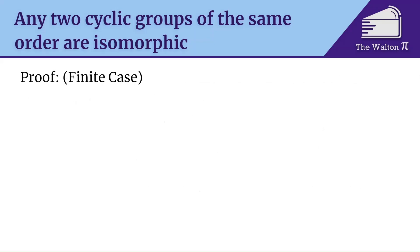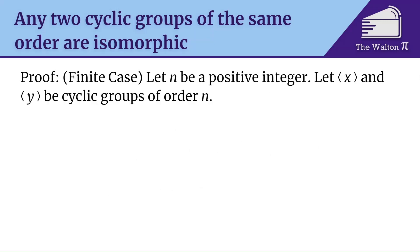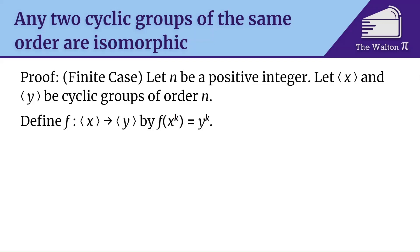We're going to start with the finite case. Let n be a positive integer, and let the group generated by x and the group generated by y be cyclic groups both of order n. We need to show that they're isomorphic, so we need to construct an isomorphism. Our isomorphism is going to be f going from the group generated by x to the group generated by y by sending f of x to the k to y to the k.